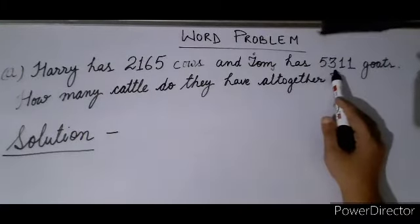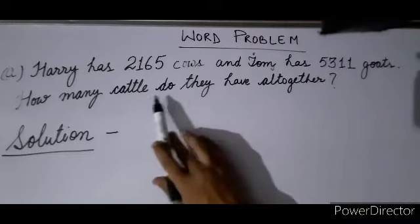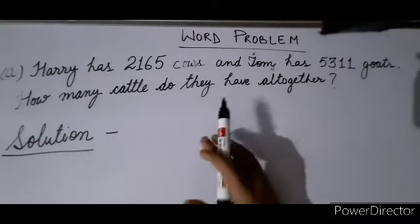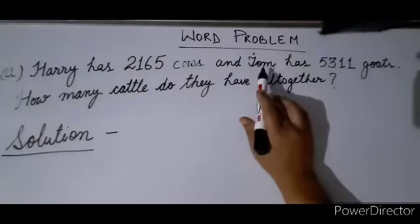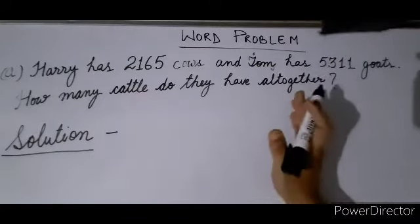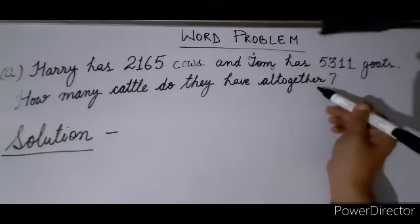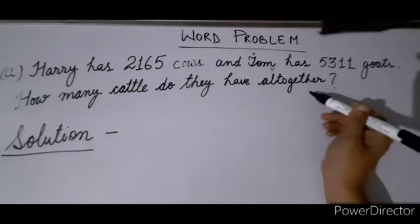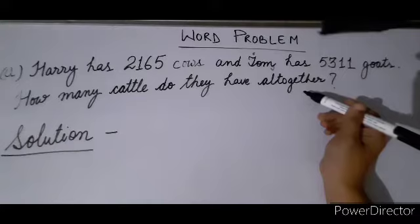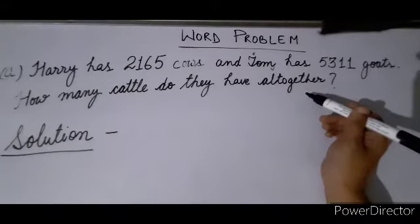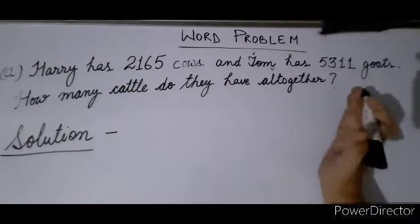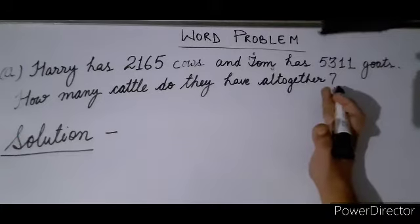Question A: Harry has 2165 cows and Tom has 5311 goats. How many cattle do they have altogether? 'All together' means combined — Harry has this many cows and Tom has this many goats. You have to tell the total cattle both of them have together.